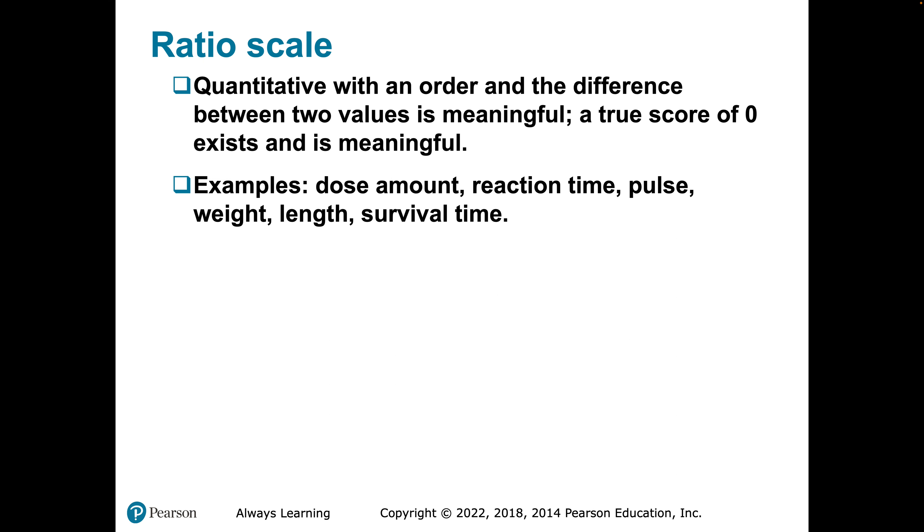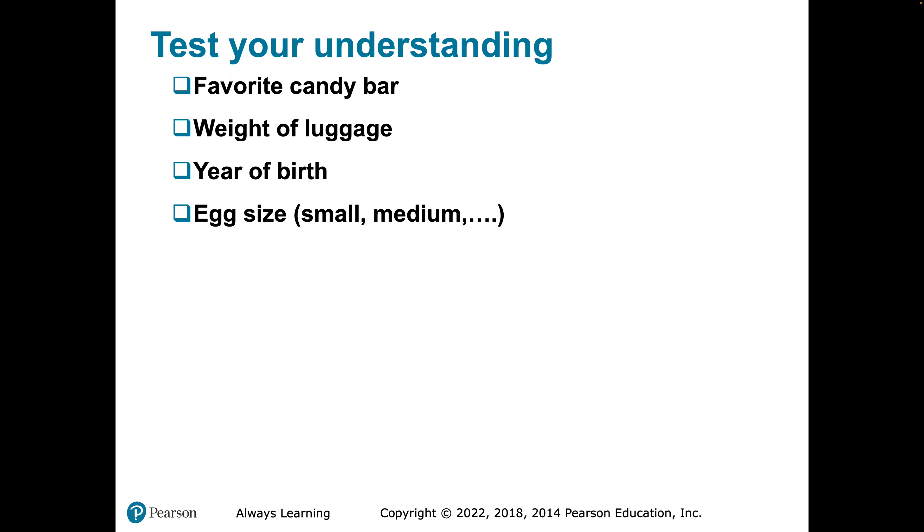The key distinction between the two quantitative scales — ratio and interval — is the existence of a true score of zero and whether it is meaningful. In your notes, get down the four scales: nominal, ordinal, ratio, and interval, and the basic differences among the four.